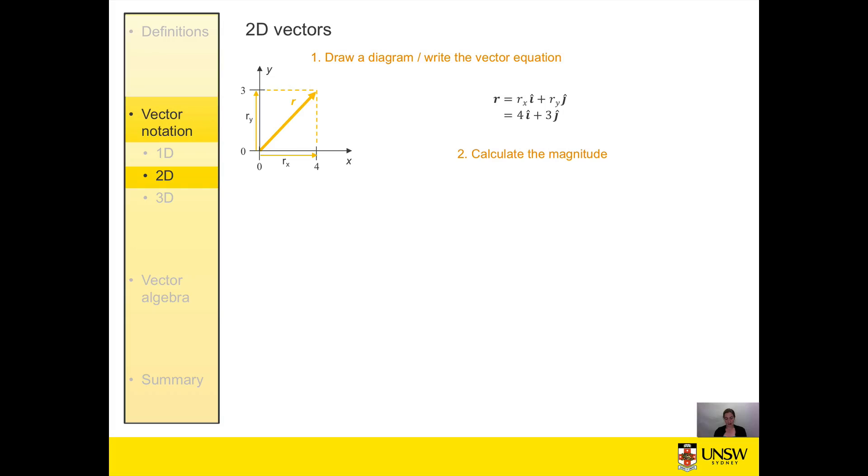Once we have the equation, we need to calculate the magnitude. Because we're working in the xy plane and the x and y axes are at 90 degrees to each other, we have a right angle triangle of which r is the hypotenuse. So we can use Pythagoras. This is true for any two dimensional vector because all three axes in the Cartesian system are at right angles to each other. By Pythagoras, r squared equals the sum of the other two sides squared. From our values, we can calculate that the magnitude is 5 units in this case.